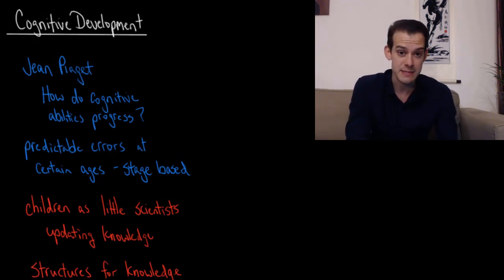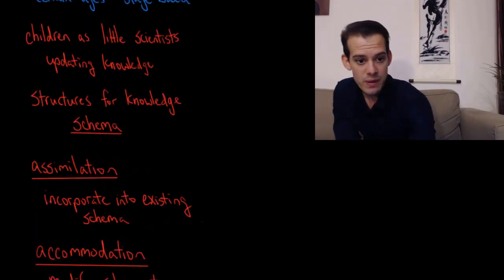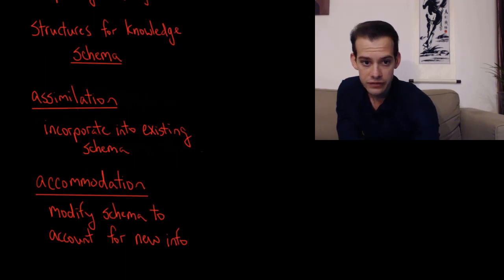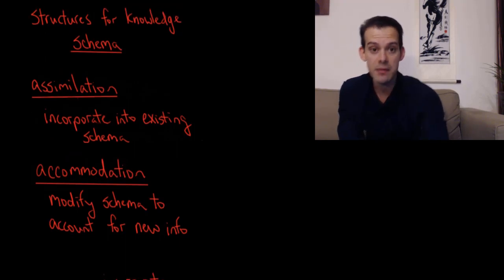Now, before we get to the specific stages of Piaget's theory, I want to talk about his overall view of how children acquire knowledge about the world. It's often described as viewing children as little scientists. What this means is that children are always testing things and always trying to update their knowledge about the world. So Piaget believed that we build up structures for our knowledge, and these structures are called schema.